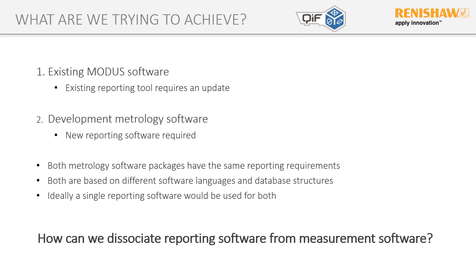So, what were we trying to achieve — what was our problem? We have an existing software product called Modus with an existing reporting tool that required an update. We also have development software tools that needed a new reporting tool. Both software packages have the same reporting requirements, but they're based on different software languages and different database structures. Ideally, we wanted a single reporting software usable with both. The problem we needed to solve was: how can we dissociate our reporting software from our measurement software?